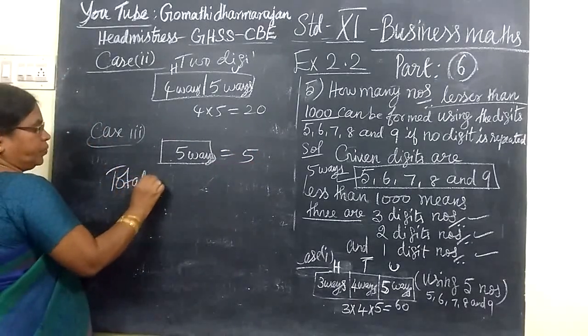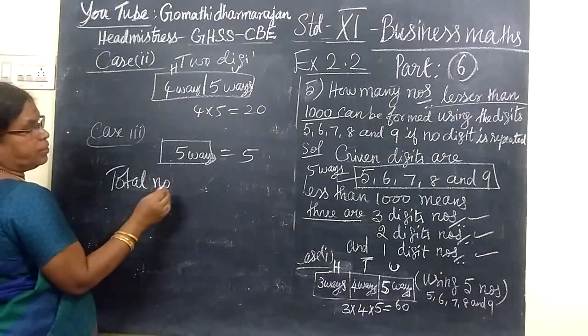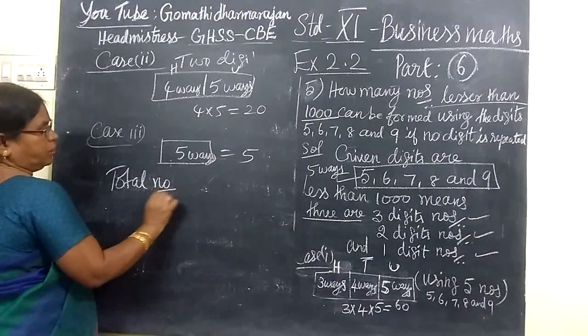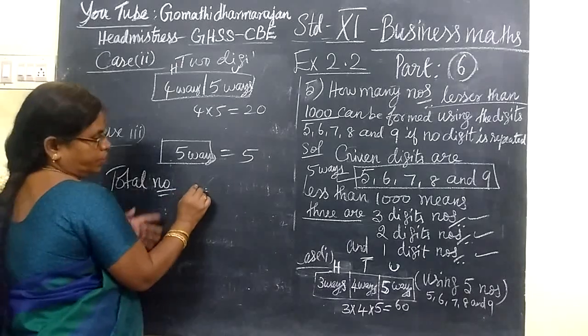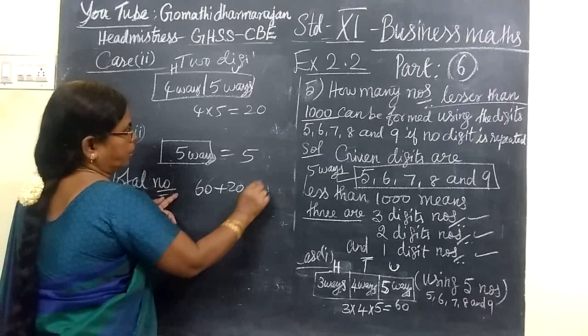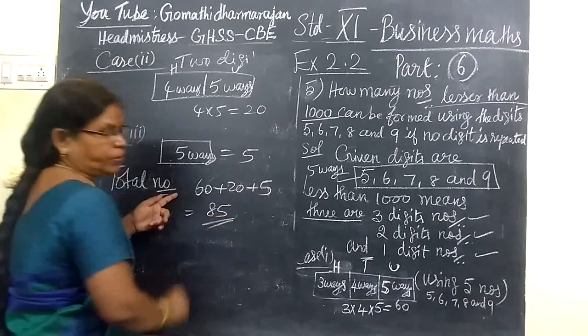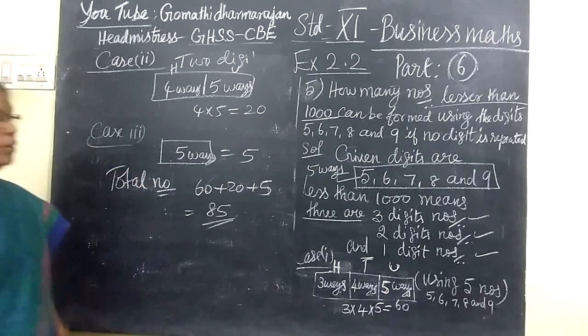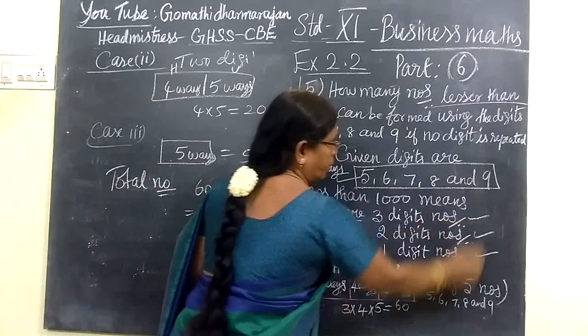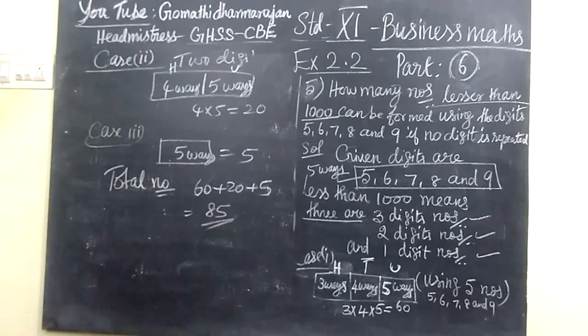Therefore, total number. Total 3-digit number, how many numbers? So that's the 3-digit number, how many numbers? 60, then plus 20, plus 5. So 85 numbers we can form. You see, these 5 numbers, we can form totally 85 numbers. So we see the answer for this.